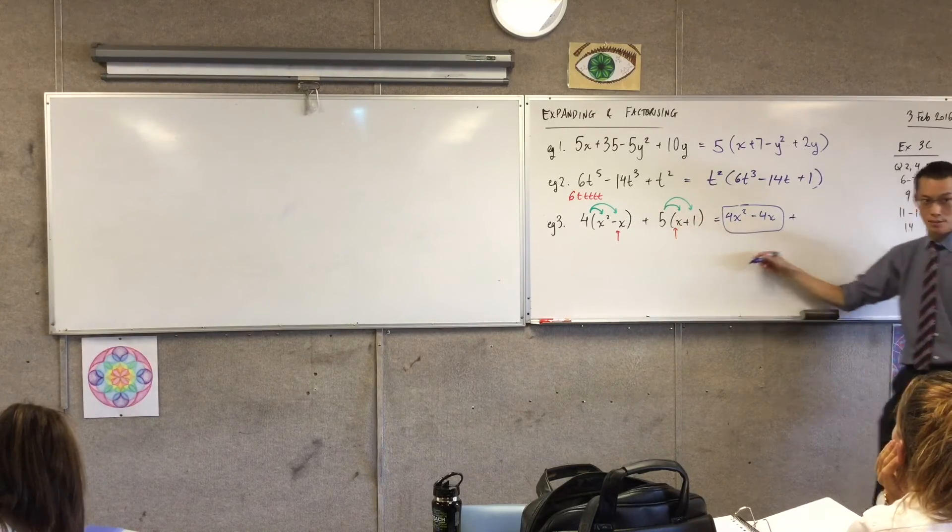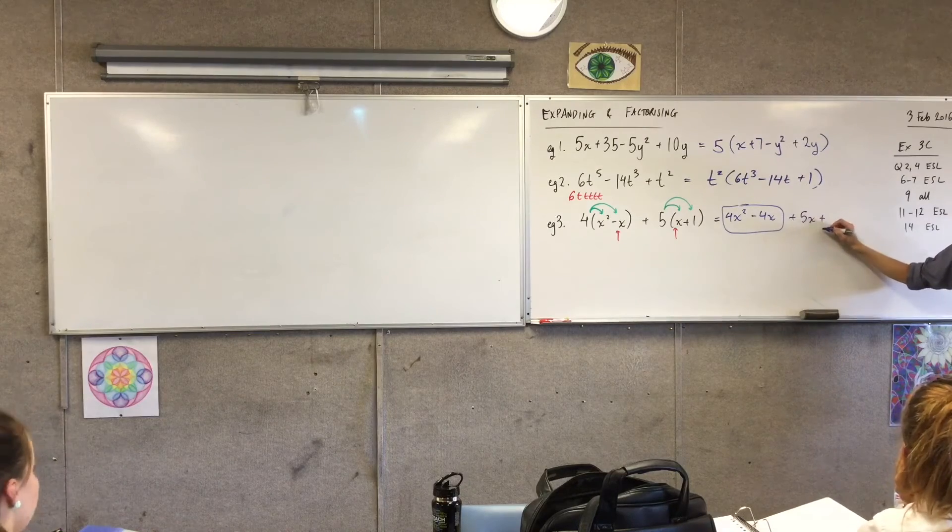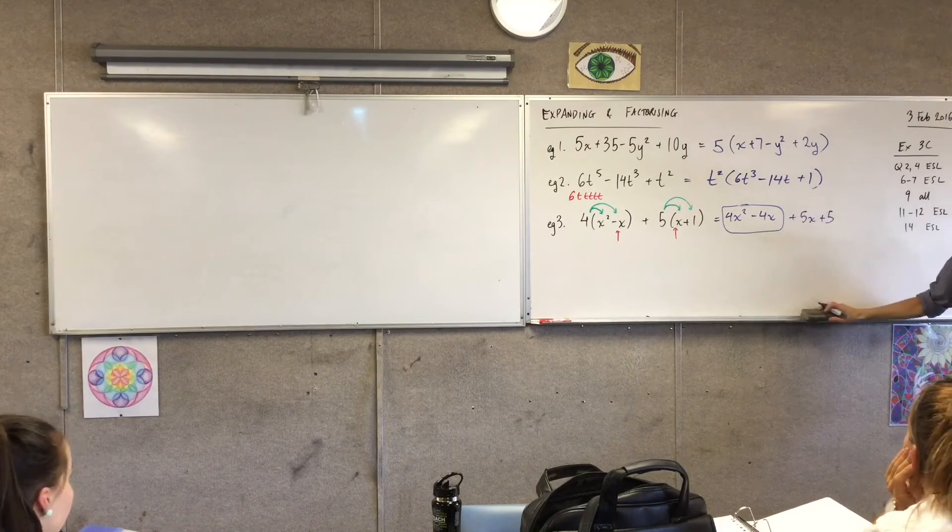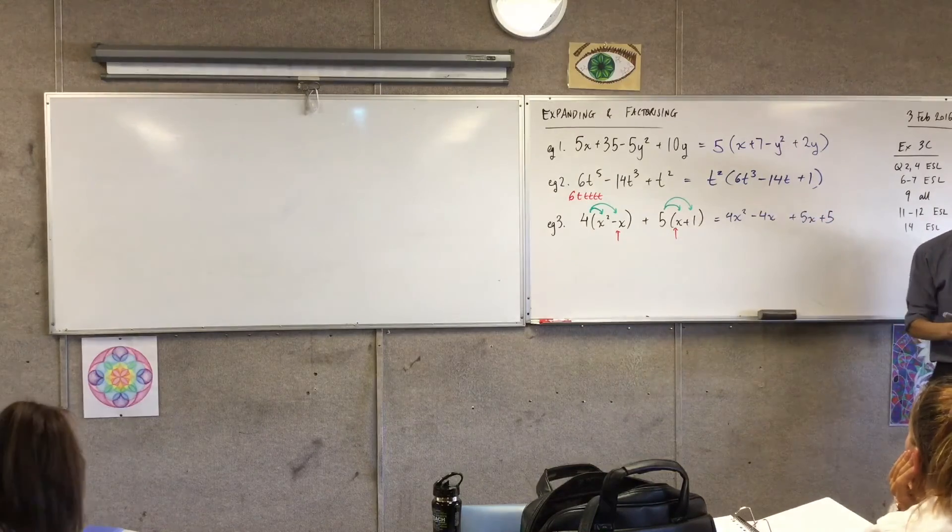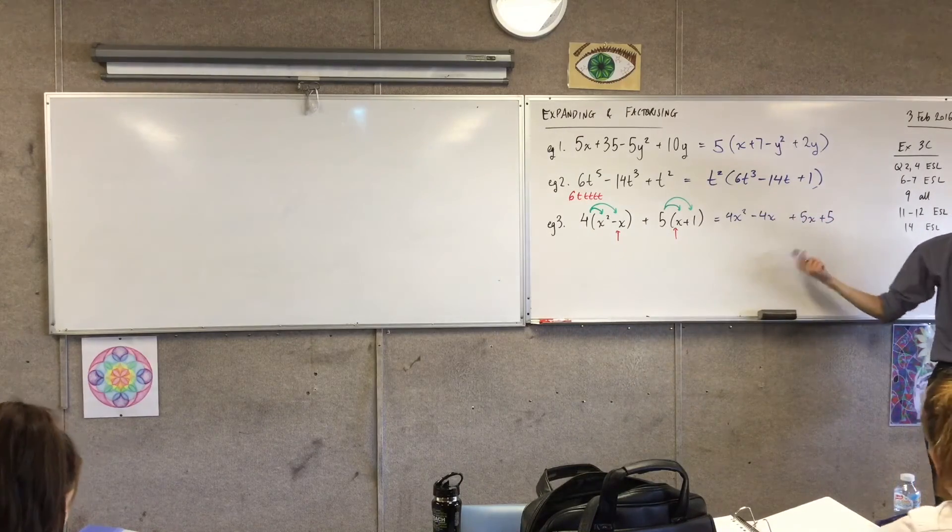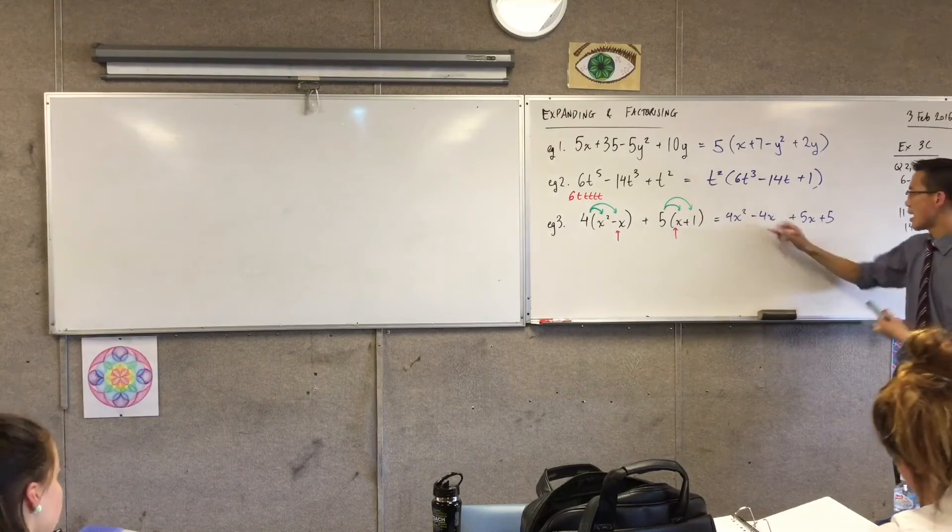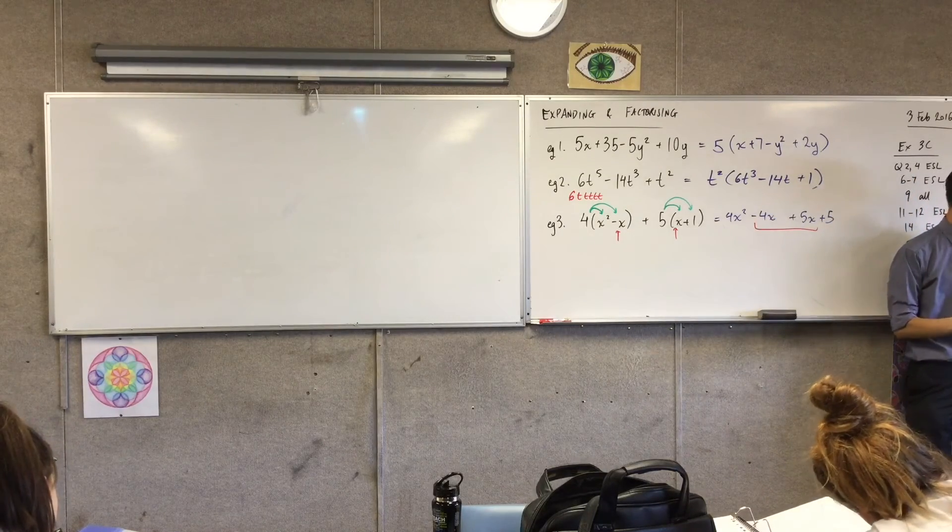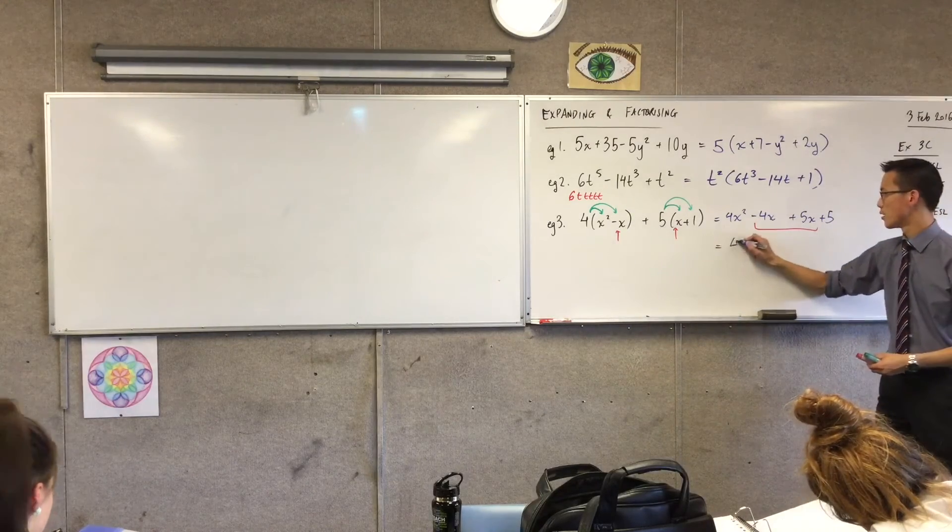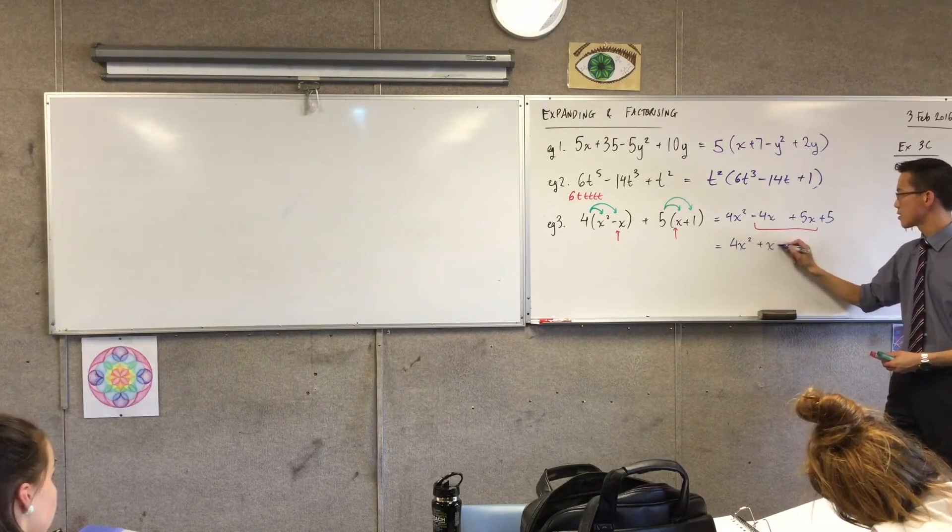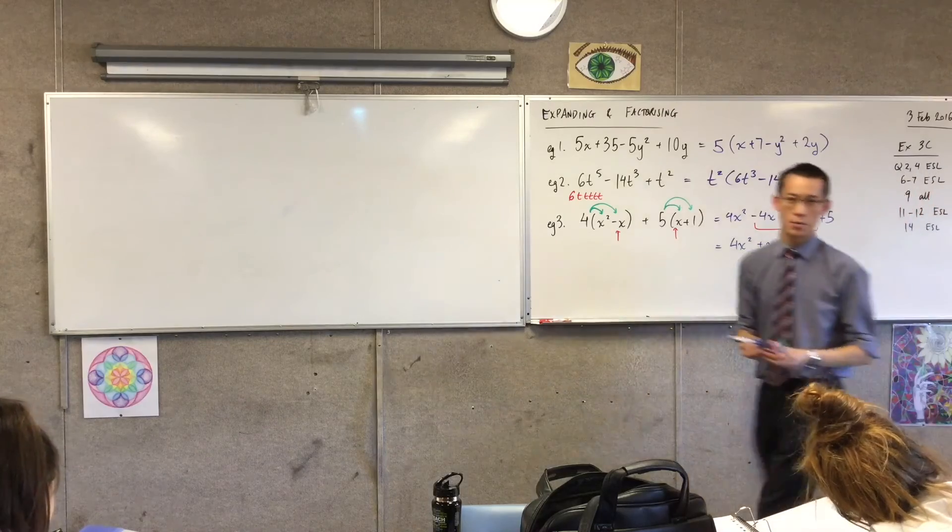I've expanded the first pair of brackets. Now I'll do the second pair. 5 times x. 5 times x. And 5 times 1. 5 times 1. Okay, so now you can see, that collecting like terms that I was after before, it's really easy. Like they're literally right next to each other. So these guys, minus 4x plus 5x. How many x's do you end up with? 1x. Just one of them, right? Just one. So this is what I end up with.